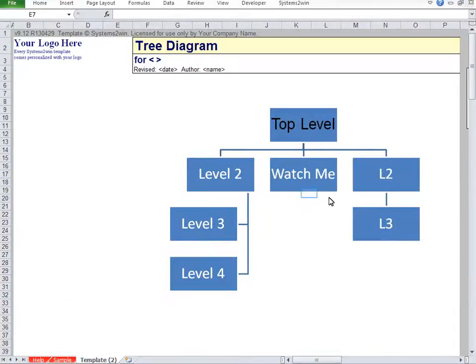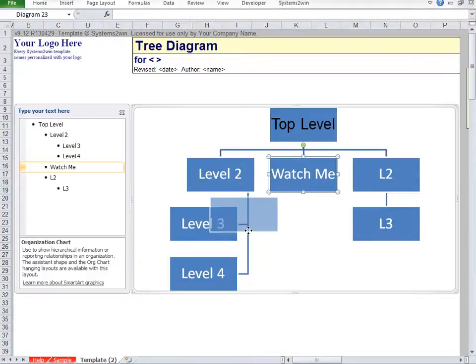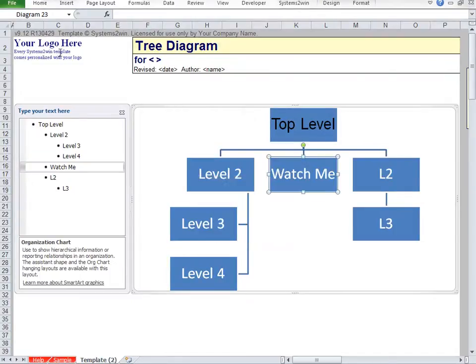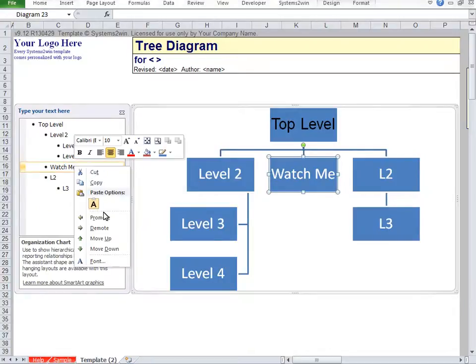Now to move something around, the last thing you want to do is to actually just pick it up and move it around. Yikes, you're going to have a mess. What you want to do is right-click in the Type Your Text window, and then select one of those four choices to move it around.